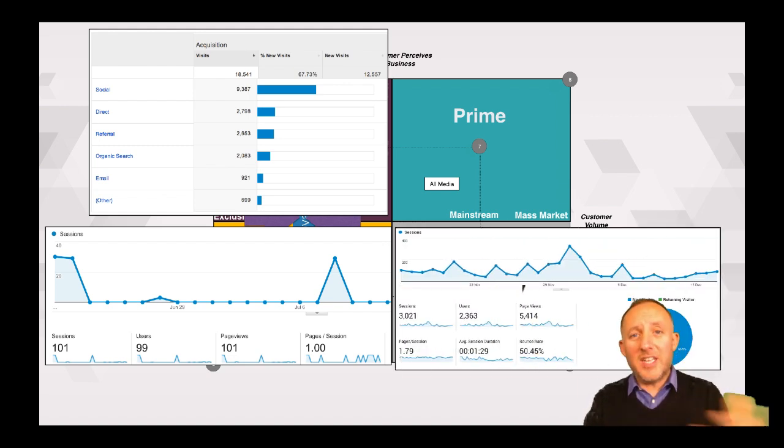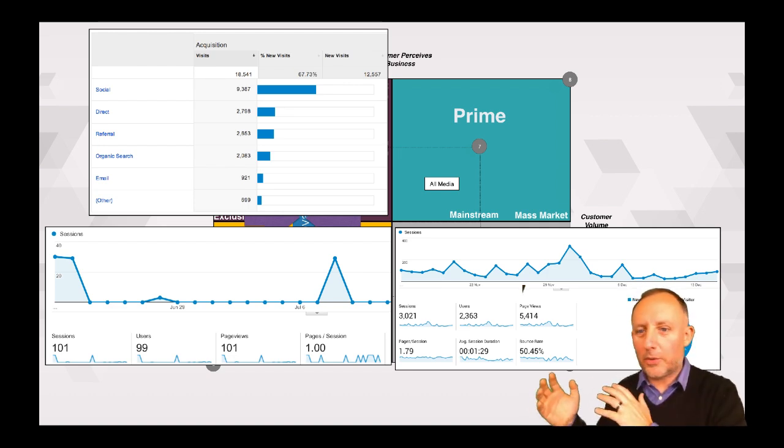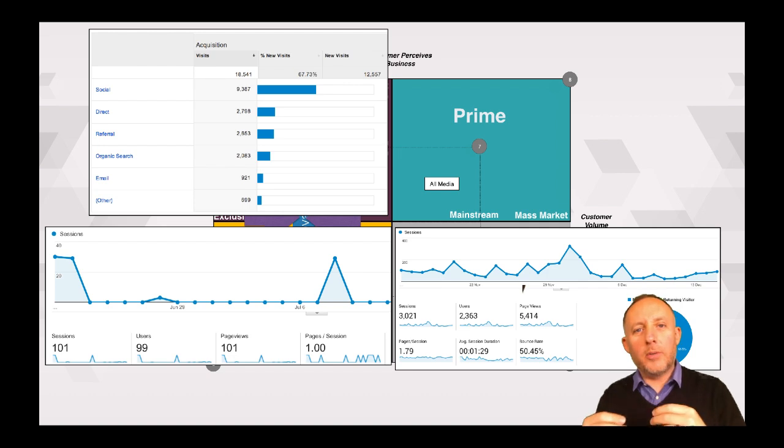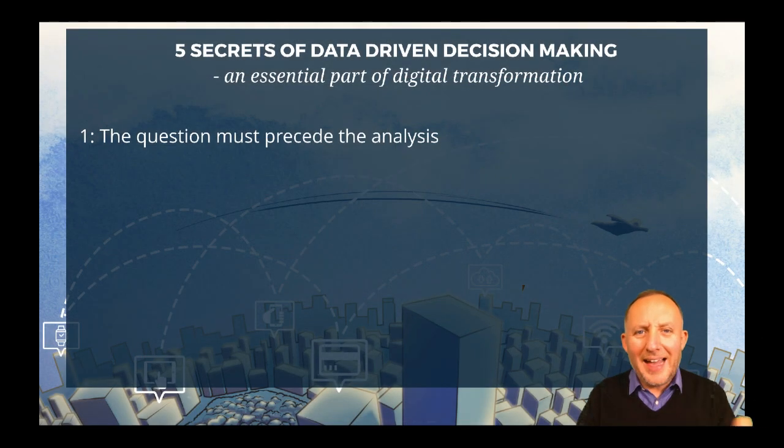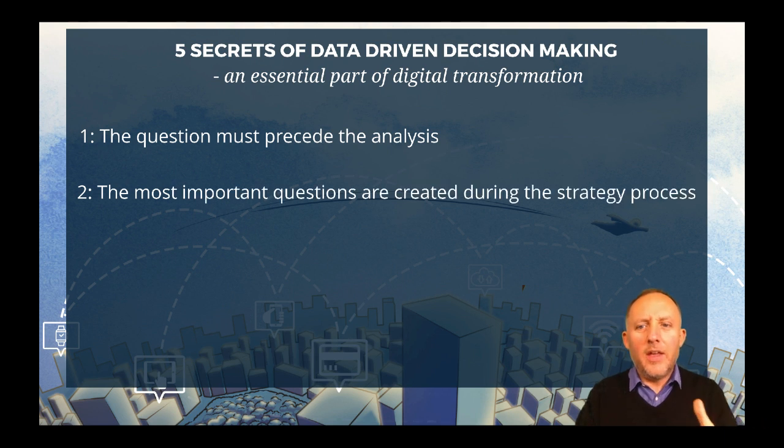Of course, attention is going to have a different data profile. The data profile around that is the cost per click, the cost per acquisition, the advertising costs are going to become evident. The new versus recurring returning visitors becomes very interesting. And prime players tend to just get huge volumes or numbers in terms of market share. The point of all of this is when we start to ask strategic questions, then we can use the data to much greater effect. The most important questions are created during strategy process.